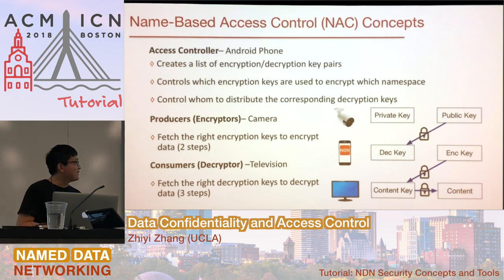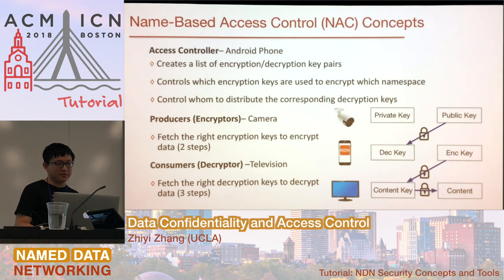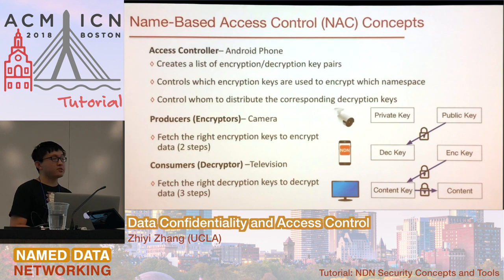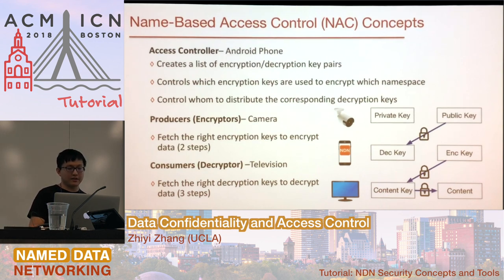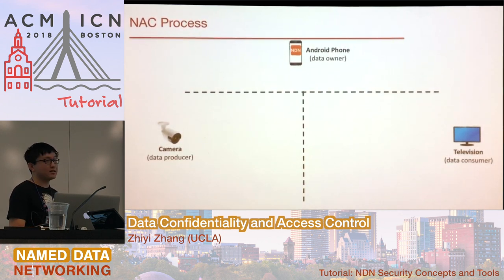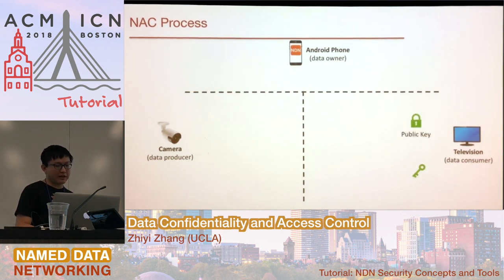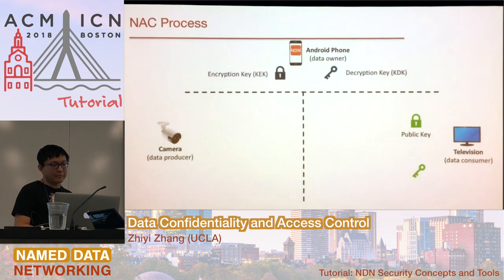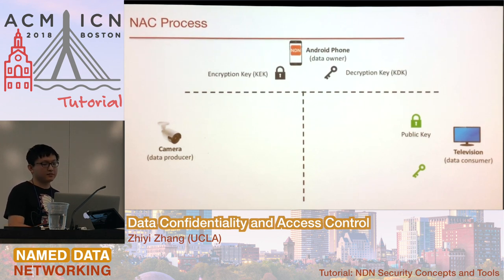The camera encrypts the content it produces. The television wants the key to decrypt this content, and everything is controlled by the access controller. The controller has the decryption key and the encryption key. It delivers the decryption key encrypted using the decryptor's public key to the decryptor, and it delivers the encryption key to the encryptor. For the encryptor, we don't use asymmetric encryption directly on content — we use a symmetric content key in the middle to improve efficiency.